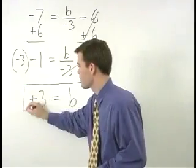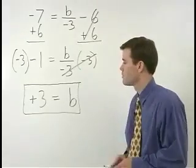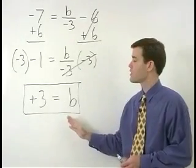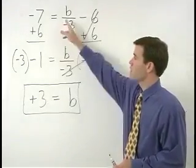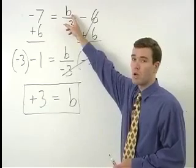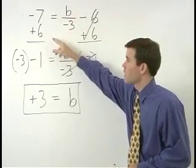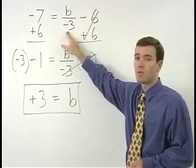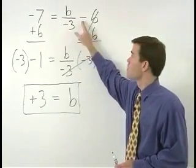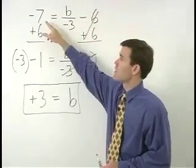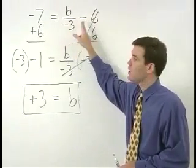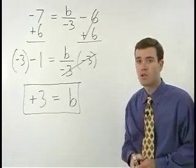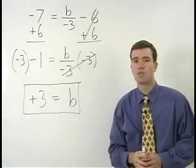And we can check our answer by plugging positive 3 back into the original equation for B. And we get negative 7 equals positive 3 over negative 3, which is negative 1 minus 6. So negative 7 equals negative 1 minus 6, which works. So we know our answer is right.